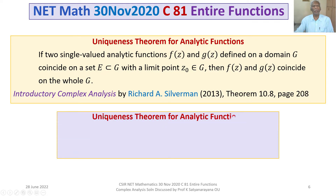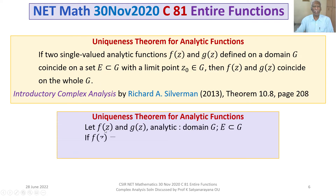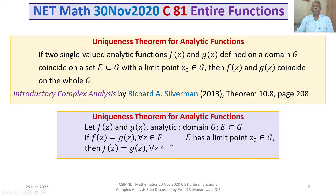To restate: we are given two single-valued analytic functions F(Z) and G(Z) defined on a domain G, with a subset E of G. If F(Z) = G(Z) for all Z belonging to E, and E has a limit point Z₀ belonging to G, then F(Z) = G(Z) for all Z belonging to G. That is the uniqueness theorem for analytic functions.